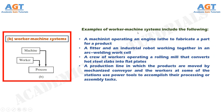Examples of worker machine systems include: a machinist operating an engine lathe to fabricate a part; a fitter and an industrial robot working together in an arc welding work cell; a crew of workers operating a rolling mill that converts hot steel slabs into flat plates; and a production line where products are moved by mechanized conveyor and workers at some stations use power tools to accomplish their processing or assembly tasks.